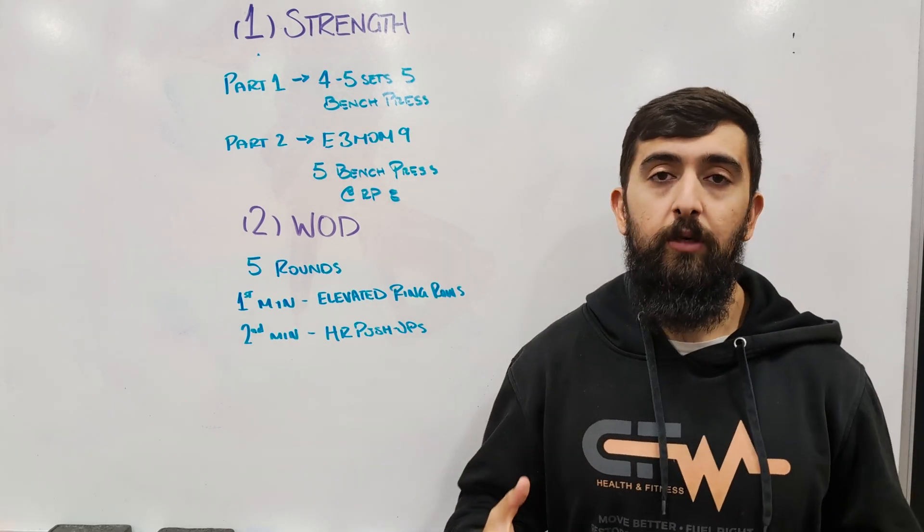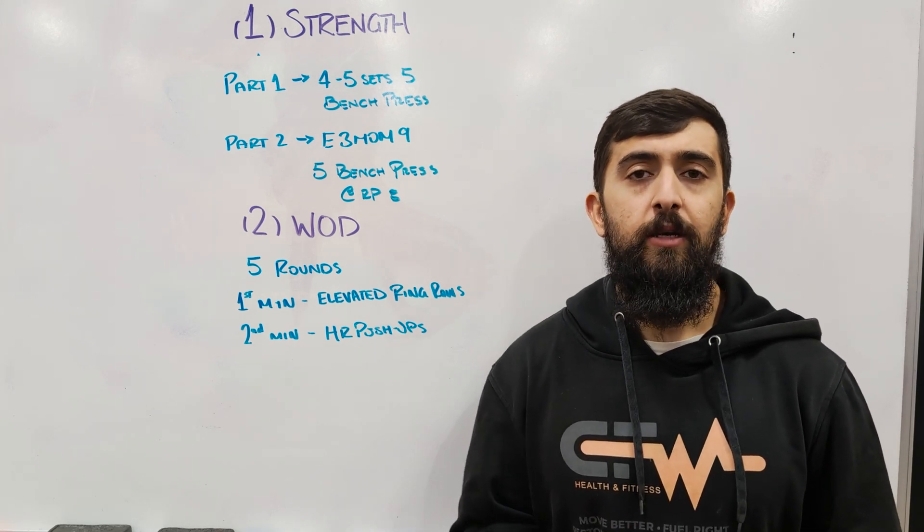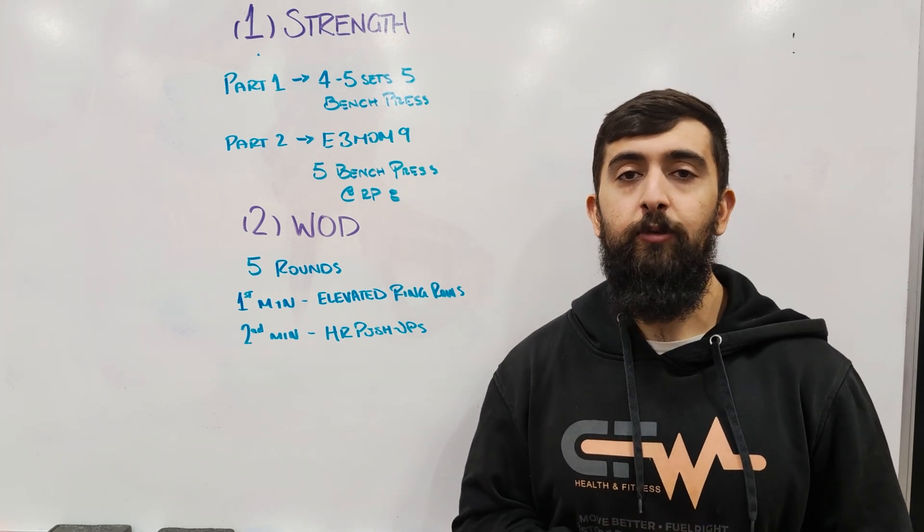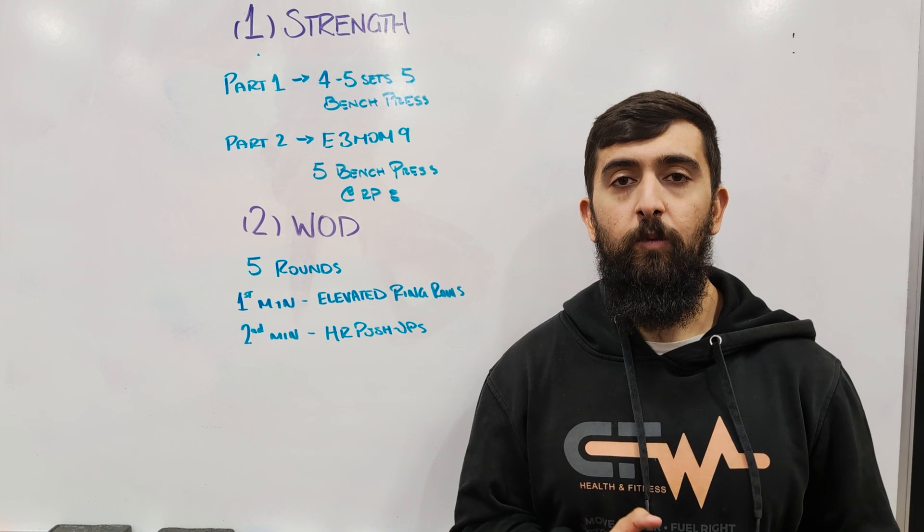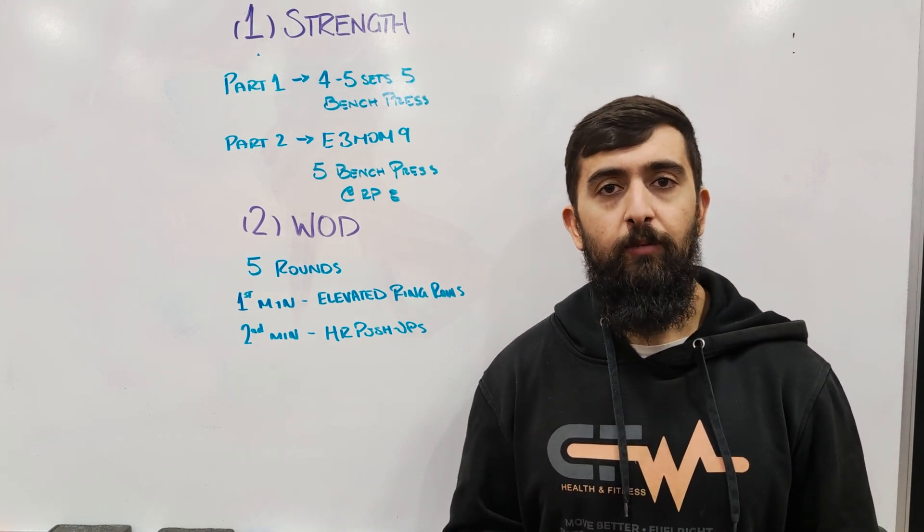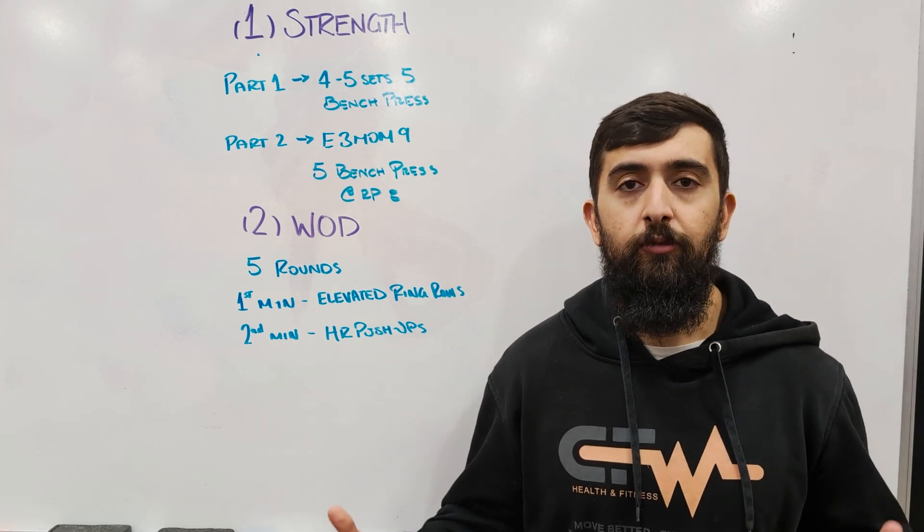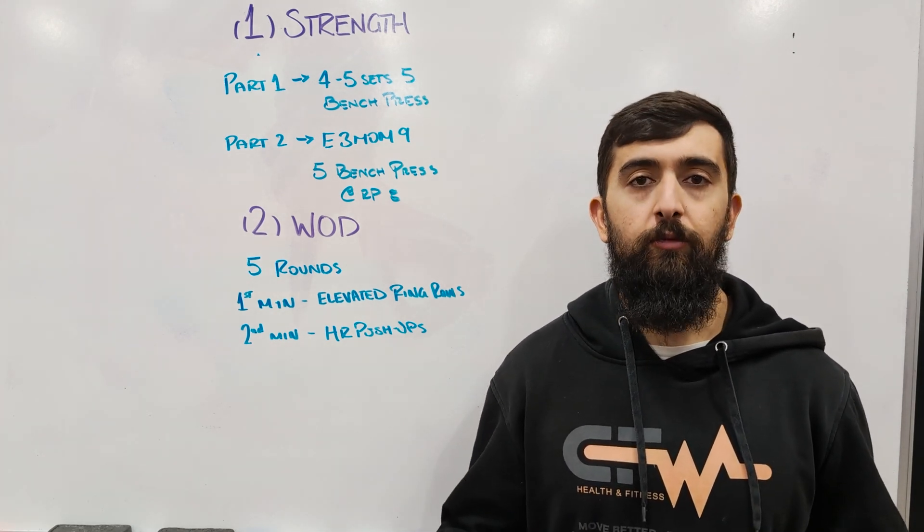The idea of that is to build volume and strength at those challenging weights. Remember, this is not building up to a five rep max today. This should be a weight that feels challenging, maybe around that rep three, rep four mark out of the bench press. It feels hard, but it's still doable to do five while still keeping good form and technique.